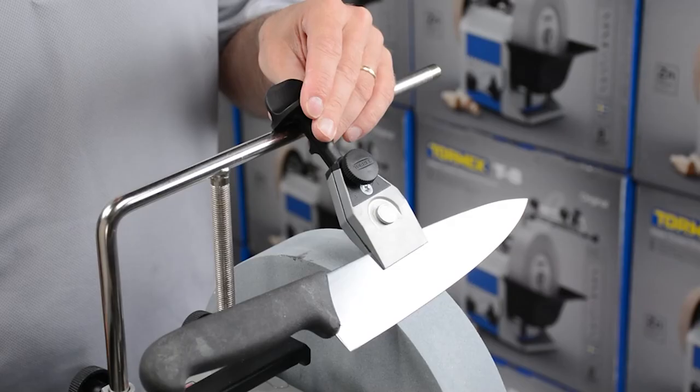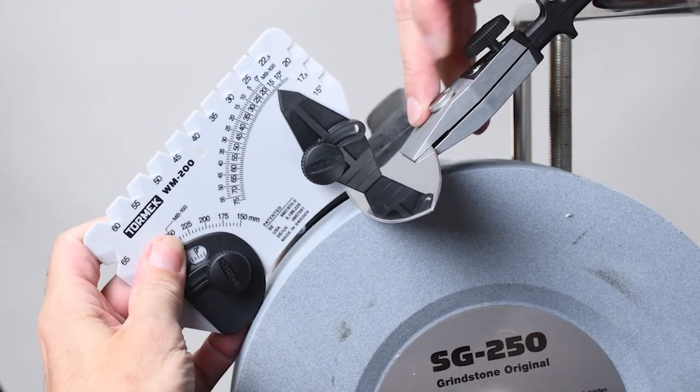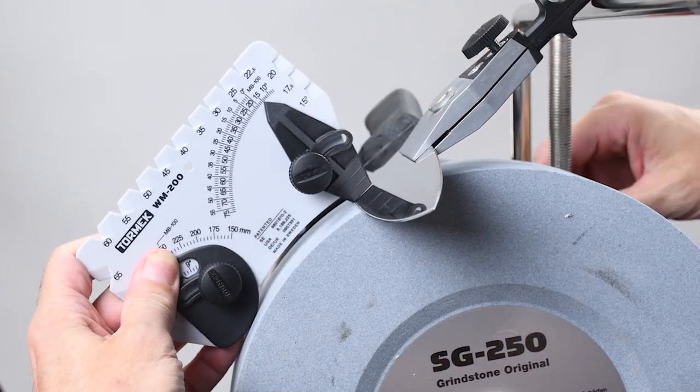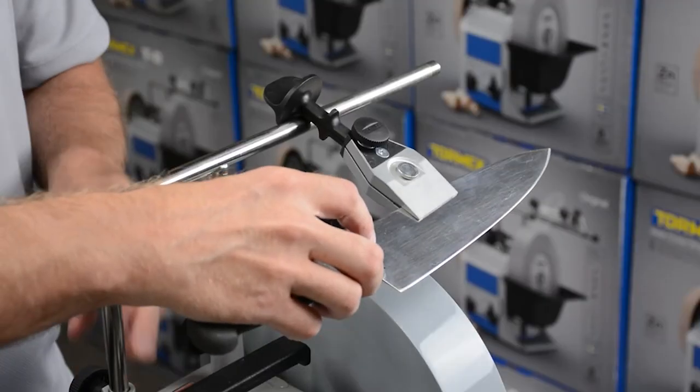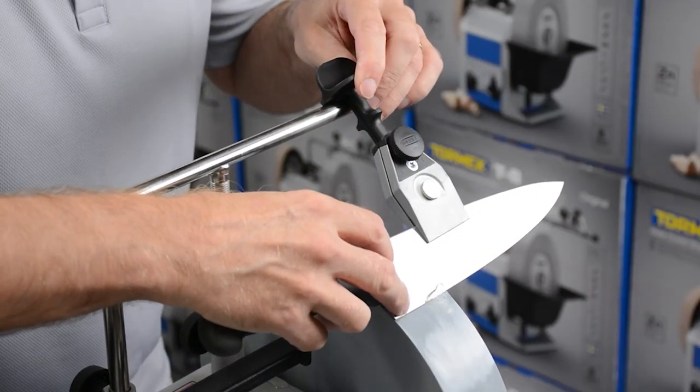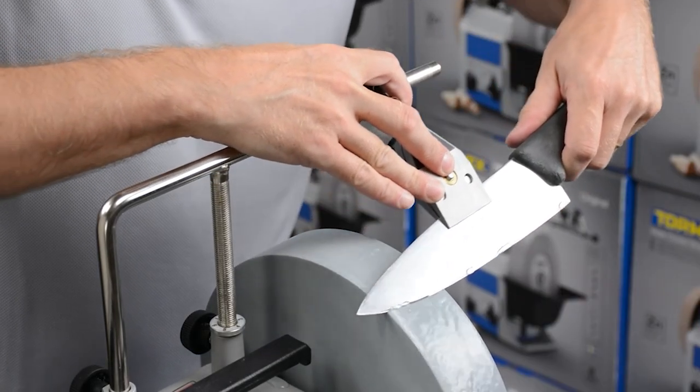Use the marker method or the WM200 Angle Master to set the desired angle. Move the knife across the wheel. Lift the handle to follow the curve of the blade.